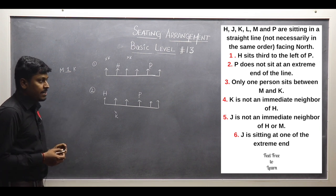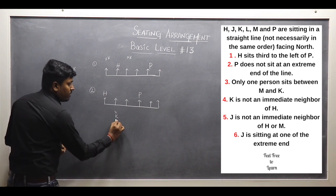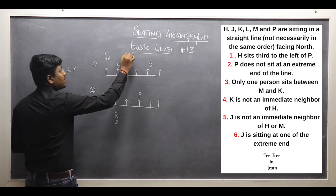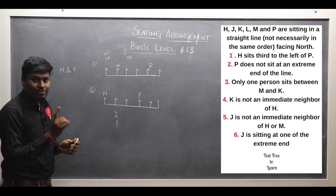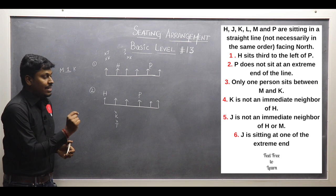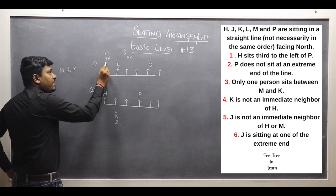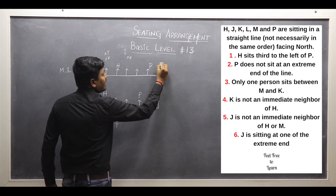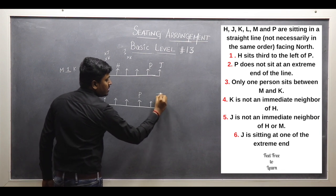Next point: J is not an immediate neighbor of H or M. So I cannot fix J adjacent to H, and similarly J cannot be adjacent to M. The last remaining point: J is sitting at one of the extreme ends. So in possible diagram 1, we cannot fix J adjacent to H, so the only chance is to fix J at the far extreme end. In possible diagram 2 as well, J must go to the extreme end.